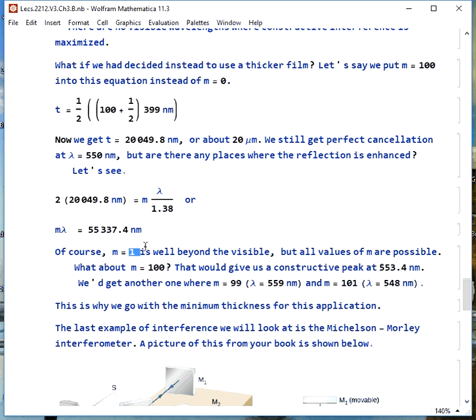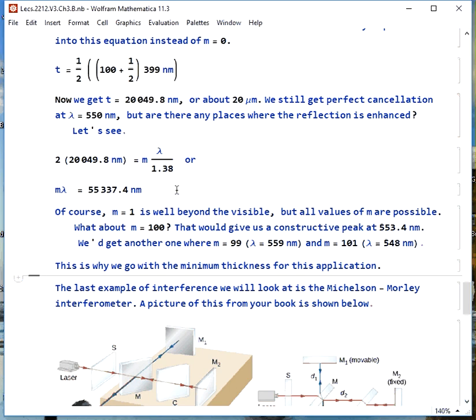We use this same formula now we're using our much greater thickness and anywhere that we have m lambda equal to about 55 microns we'll have constructive interference. Of course this won't happen at m equals one because this would be deep in the infrared but any value of m is possible. If for example we plug in m equals 100 that tells us we'll have a constructive interference peak at 553.4 nanometers. We can see we'd have another one at 559 at 548. There will be many many peaks where we get constructive interference if we use the thicker film. So this is the reason why we go with the minimum thickness. There's no room for constructive interference anywhere.